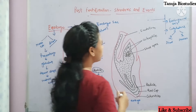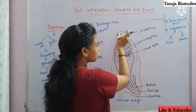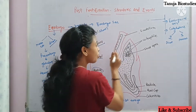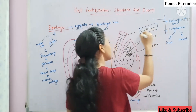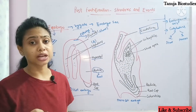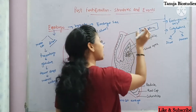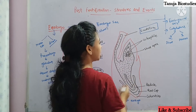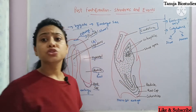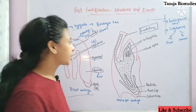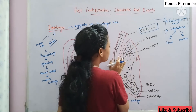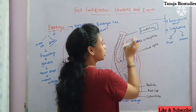Now look at monocot. As I told you, monocot has only one cotyledon. This single cotyledon has a particular name in monocot — it is called scutellum. This is important to remember. The scutellum is actually present on the lateral side of the embryonal axis.